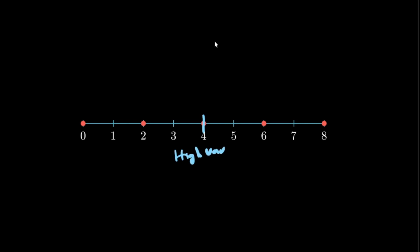In general, variance, denoted by sigma squared, is defined as the sum of square of distances of all these data points from the mean, divided by the total number of data points.